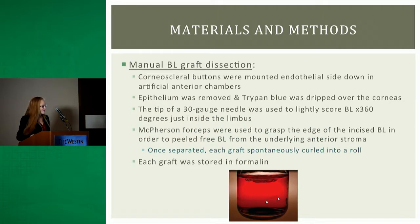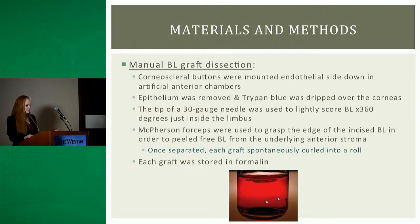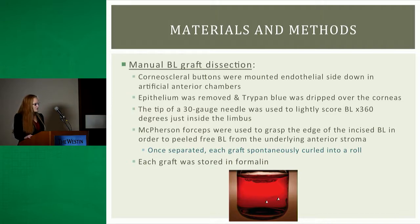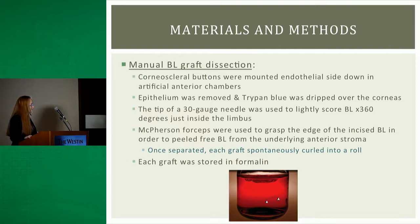The manual Bowman layer graft dissection group followed a method previously described in the literature. For this group, we were able to use corneoscleral buttons mounted in artificial anterior chambers. Again, the epithelium was very carefully removed. Trypan blue was applied to the surface of the corneas, and then a 30-gauge needle was used to slightly score Bowman layer 360 degrees just inside the limbus.